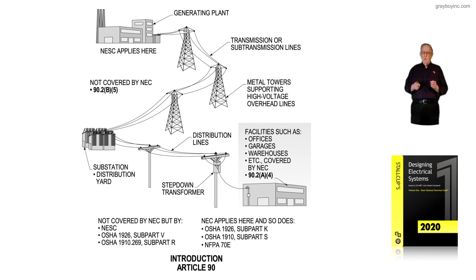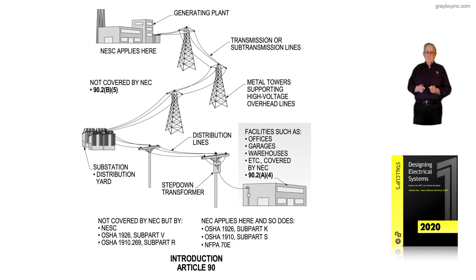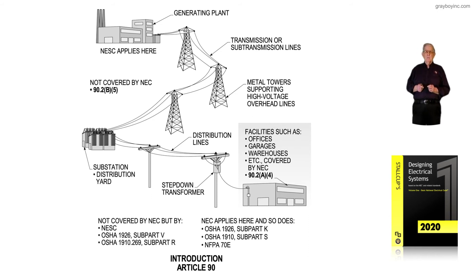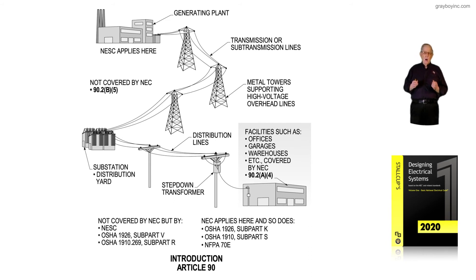As an example under 90.2(A), we covered earlier the layout of the code and the articles and chapters that would govern the installation of wiring methods and equipment inside the building. Once the equipment, wiring methods, and building construction have been approved by each inspector for each category — building, construction, electrical, plumbing, and heating — the applicable standards then come into play.